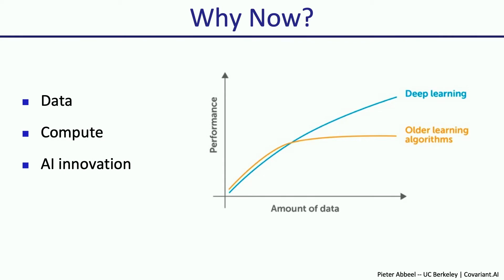The enabling factors have been the amount of data and compute available today, combined with AI innovation. As the amount of data grows, deep learning will keep doing better and better. More traditional approaches — because they don't have this universal expressiveness — will eventually saturate in performance. Initially, traditional approaches often did better because they have a lot more human engineering. But current trends show we're now in data regimes where collecting more data and letting neural nets absorb it all outperforms the combination of human engineering and small amounts of data.